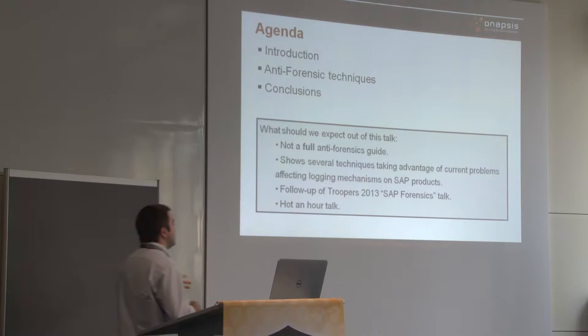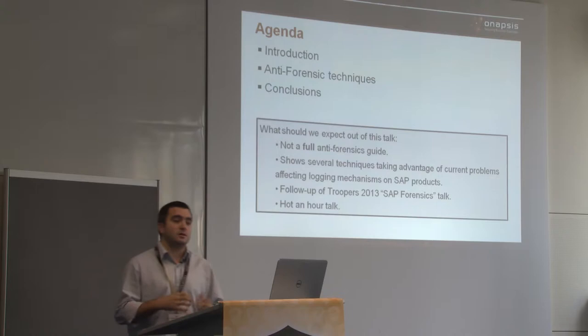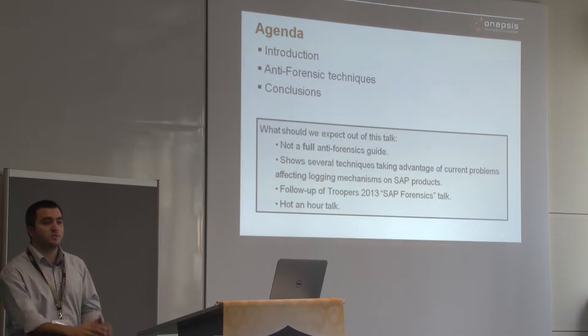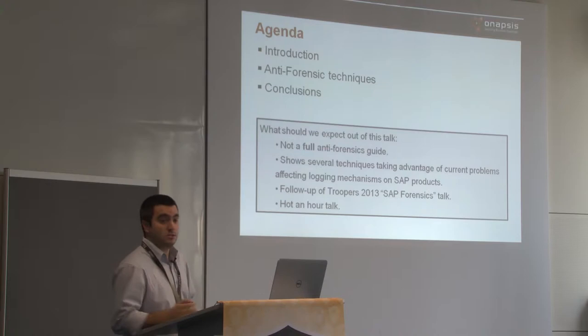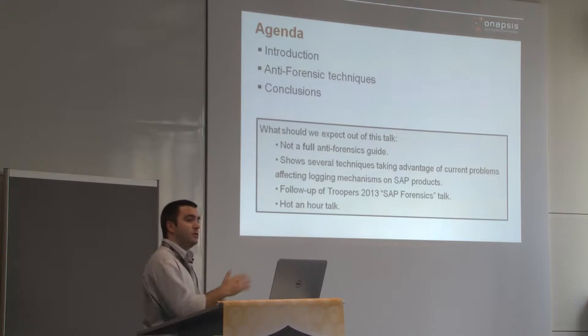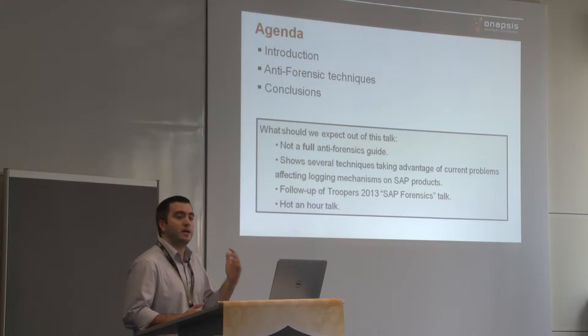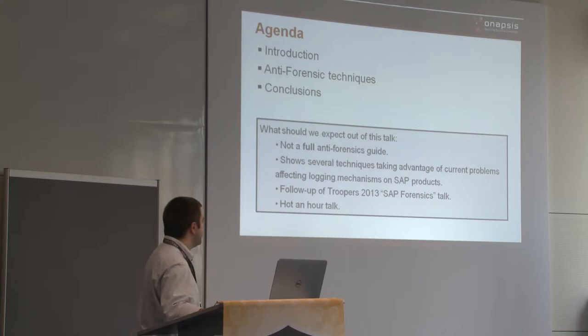This is a follow-up of last year's talk about forensics. Last year, with Mariano, we described all the different traces and logs on SAP systems and the anatomy of an attacker going through different parts of the SAP system and the different traces being generated. If you want more detail on that, go back to the Troopers page — in the archived part you'll find all this information.